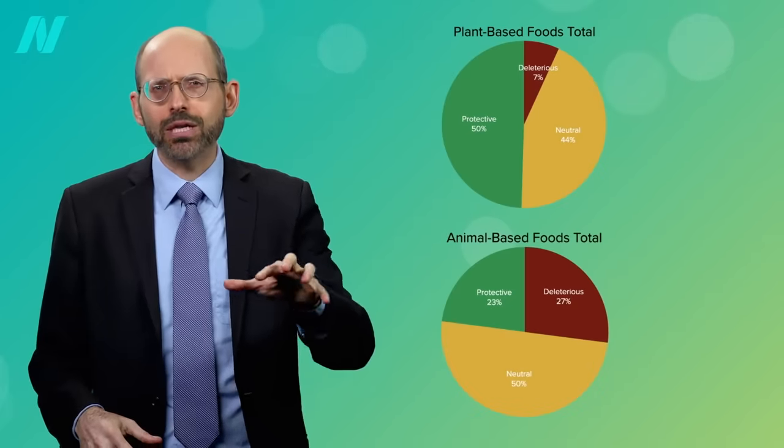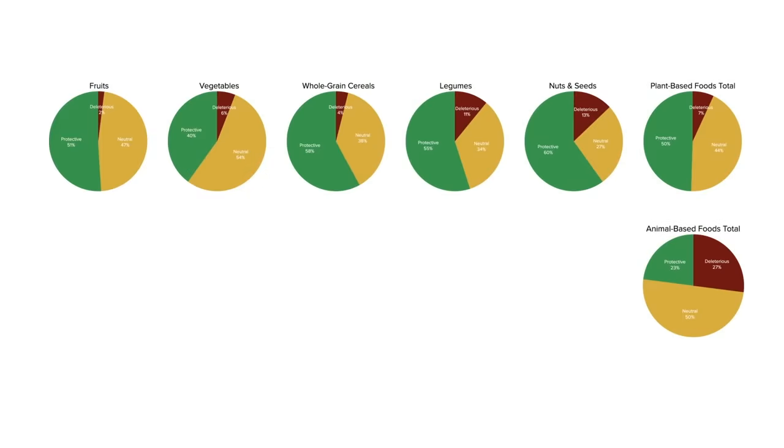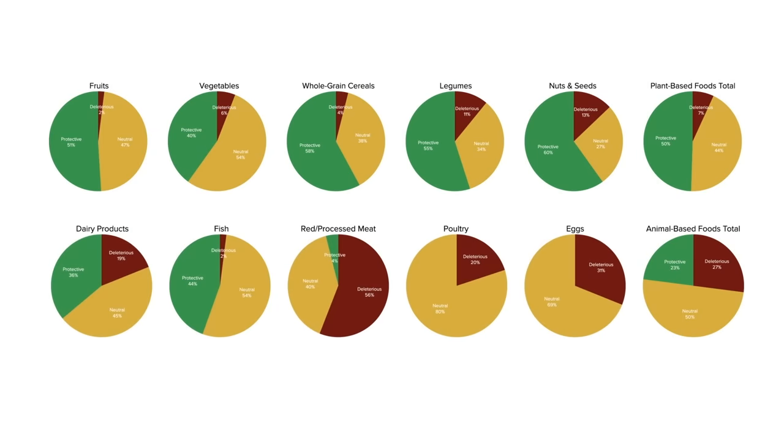Let's break these down though. The plant foods consistently rate uniformly well, reflecting the total, but the animal foods vary considerably. As you can see, if it wasn't for dairy and fish, the animal foods total would swing almost entirely neutral and negative.